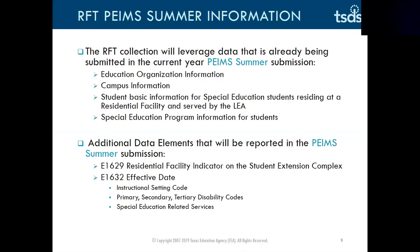The RFT collection will use data that is already being submitted in the current year PEIMS summer submission, including education organization information, campus information, student basic information, student basic information for special education students residing at a residential facility and served by the LEA, and special education program information for students. Additional data elements will be reported in the PEIMS summer submission: E16-29 residential facility indicator on the student extension complex, E16-32 effective date, including instructional setting code, primary, secondary, and tertiary disability codes, and special education related services.